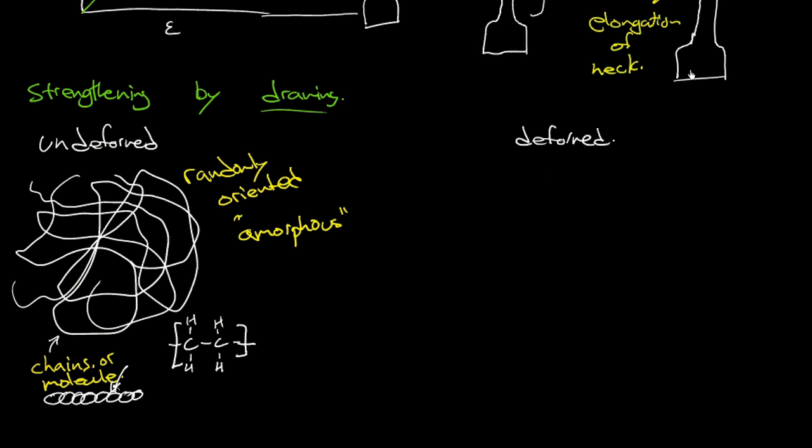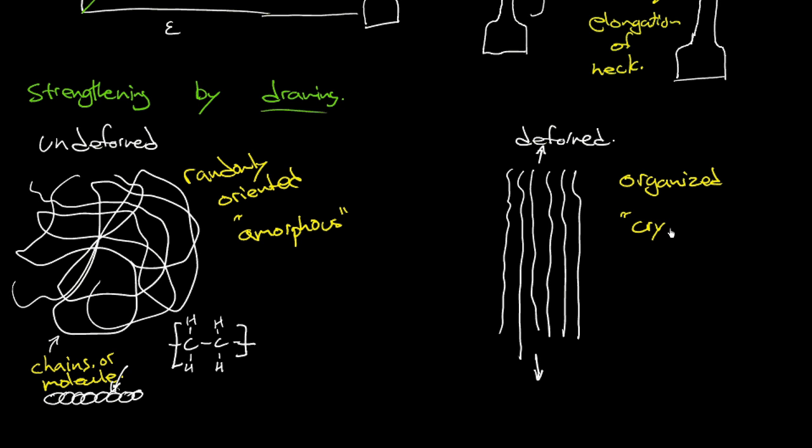And then what happens when we start to elongate it? And remember, we're elongating it in this example up and down in the vertical axis. Okay, so then those same chains, and I'm exaggerating of course in this cartoon sketch, but those same chains now start to stretch out. As you pull it up and down, the chains, or the molecules, orient with the loading axis. So now they're organized, or we'll say that they're crystalline. The polymer has some crystallinity. It has some organization. And this is important for a couple of reasons. One, because the bonds that are holding these links together, this carbon to this carbon, for example, are strong.